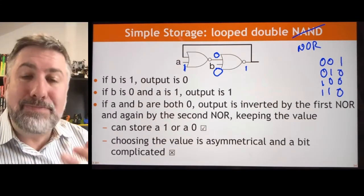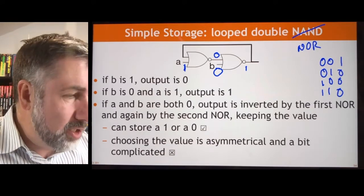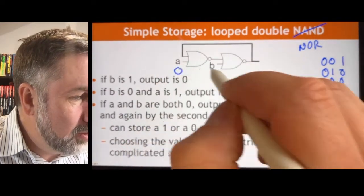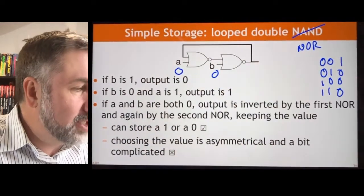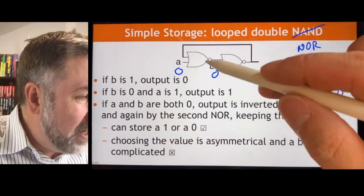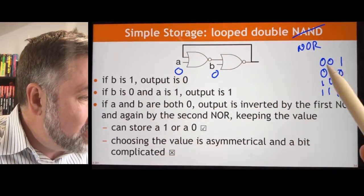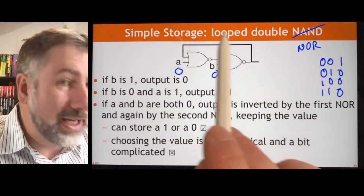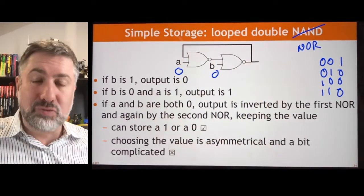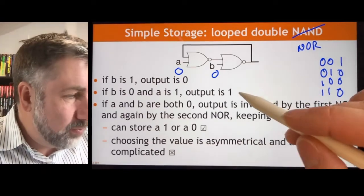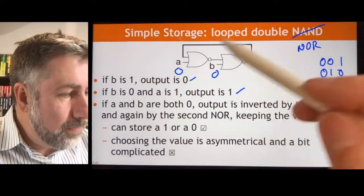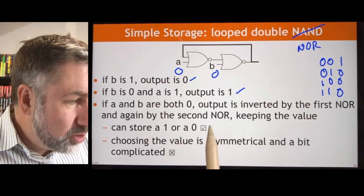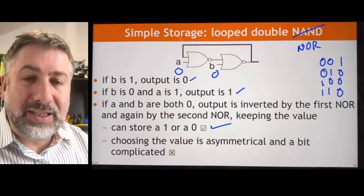Then, can we keep that information and not have it change? If a and b are both 0, we'll make a 0, make b 0, and see what happens. If b is 0, the output depends on whatever a is. If a is 0, the output depends on whatever b is. And so this value will just invert, invert again, and be stored. So this is really cool. We can store a 1 this way, we can store a 0 that way, we can keep the value.